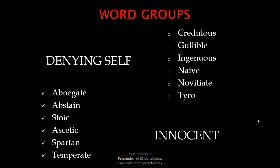The next word group is when a person denies himself. For example, abnegate, abstain, stoic, ascetic, spartan, and temperate — not spending too much in terms of money or other material gifts on oneself.